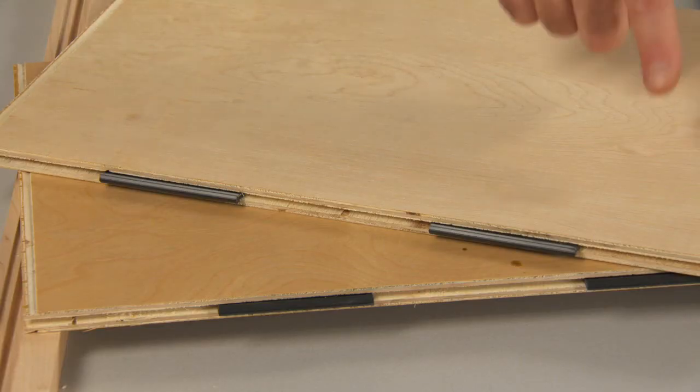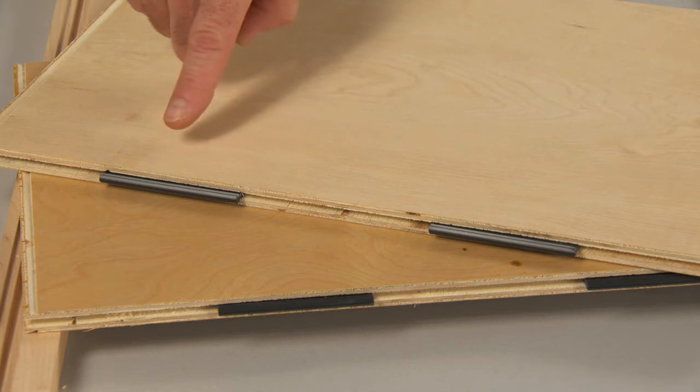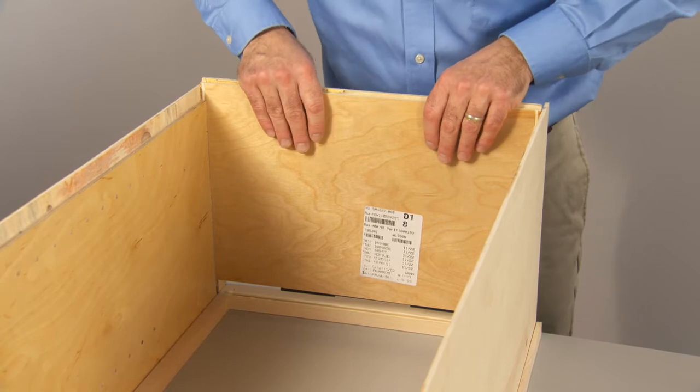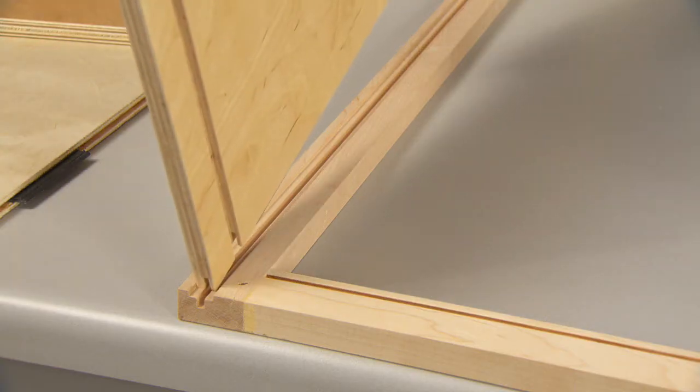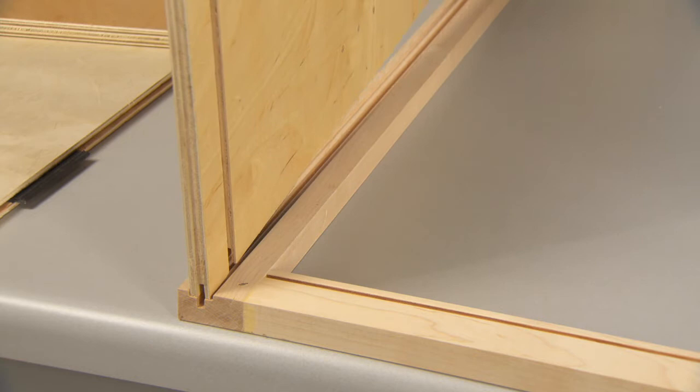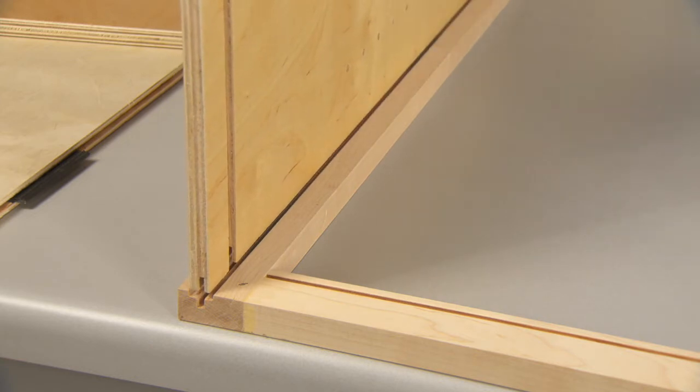Cabinet sides, tops and bottoms all come with pre-inserted splines used to hold parts together until glue dries. On front frame styles, the side is recessed in the spline groove. On front frame rails, the top and bottom butt against the rails.